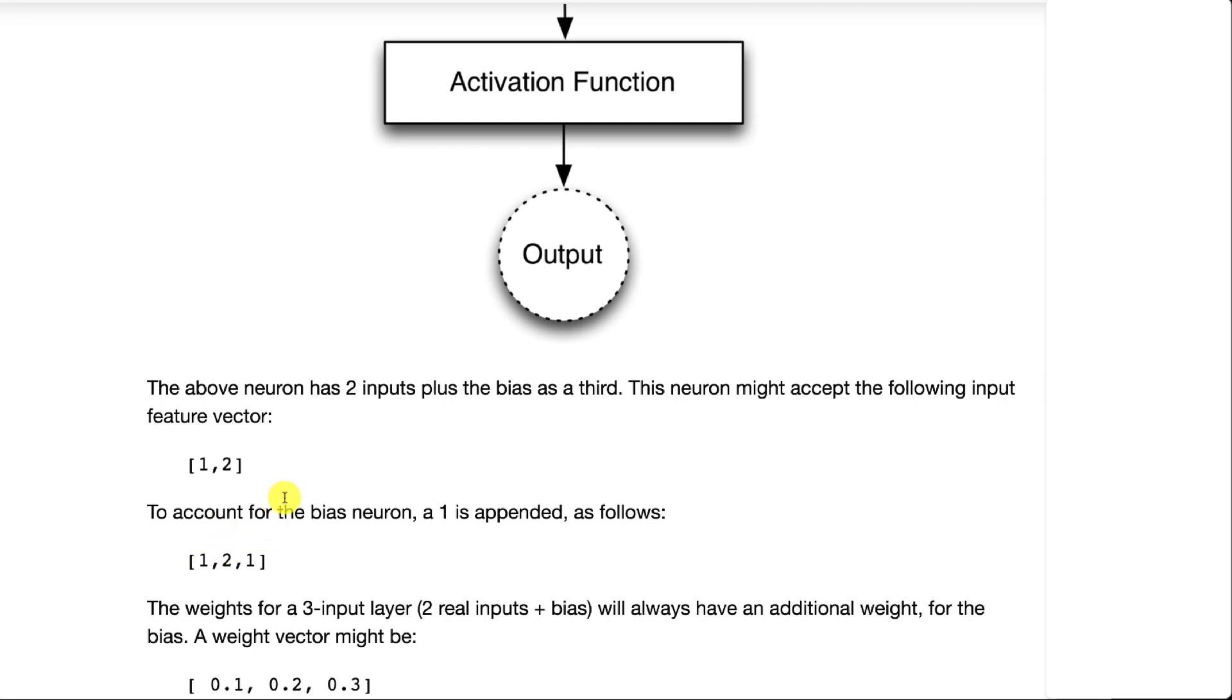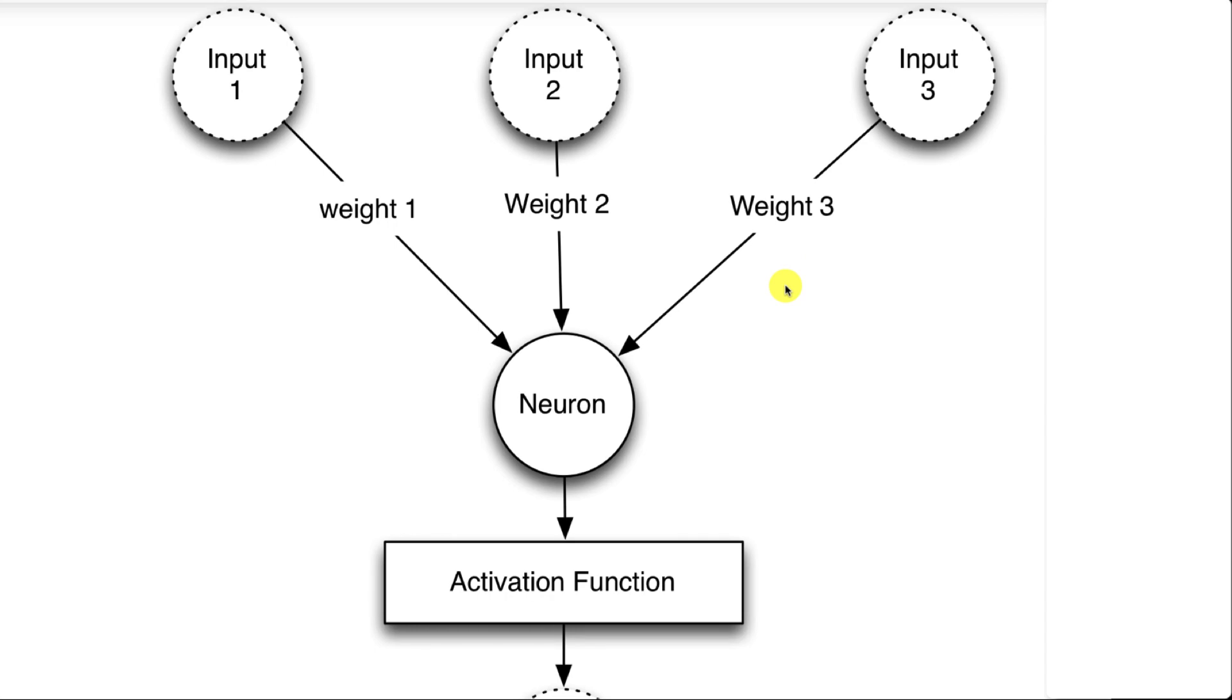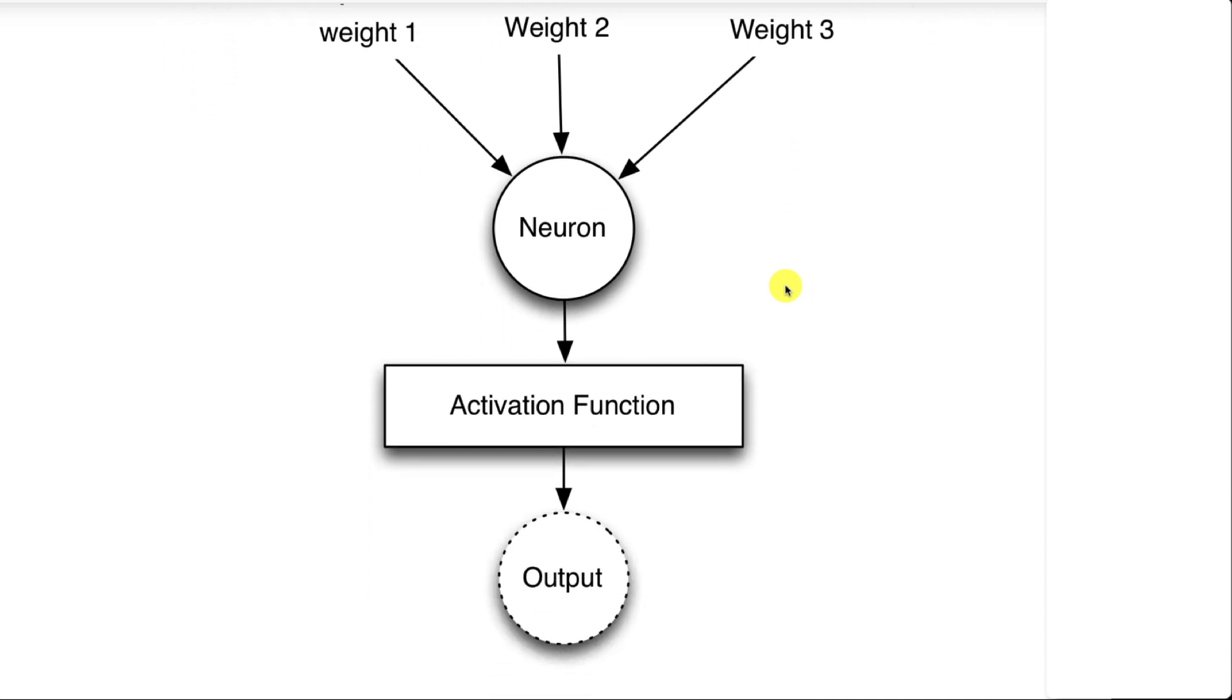1 goes into the first neuron, 2 goes into the second, and this 1 goes into the third neuron that becomes basically the bias. So whatever this weight is just gets added to it, kind of like an intercept. Since this is 1, we're multiplying 1 times the third weight. That's basically how bias neurons work.